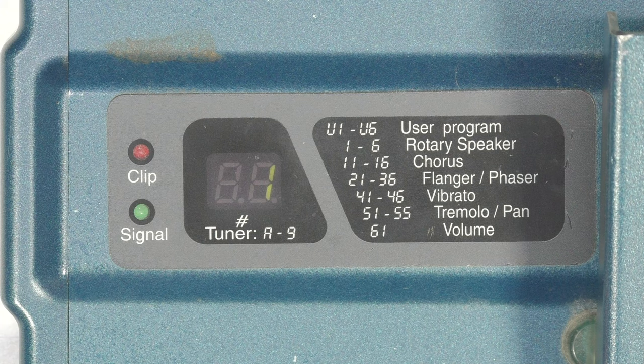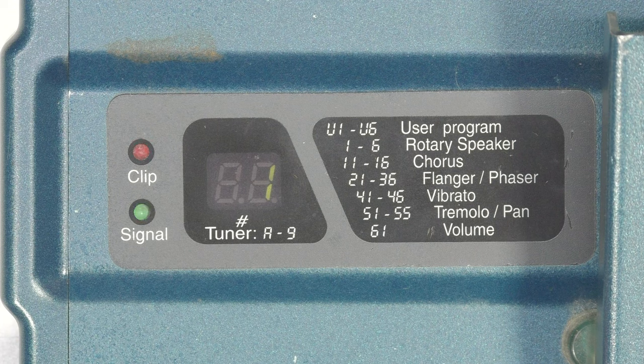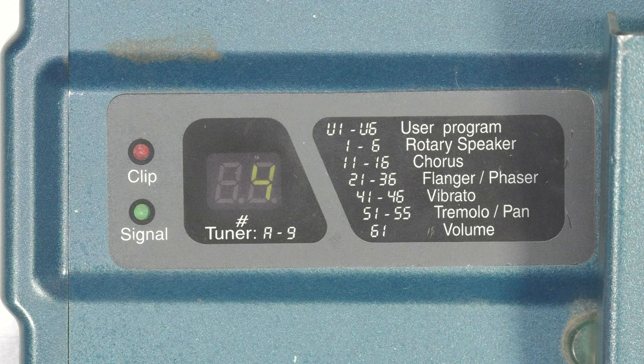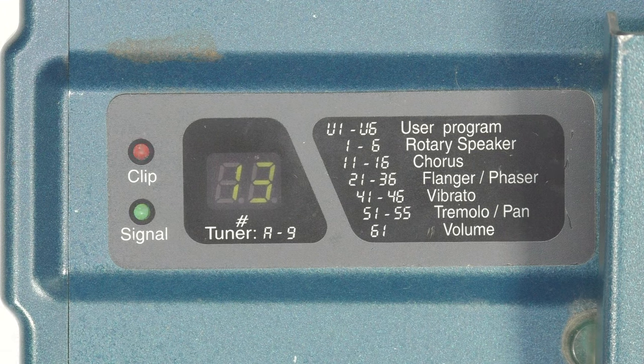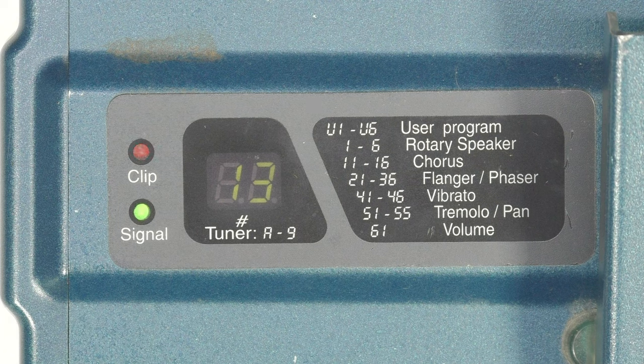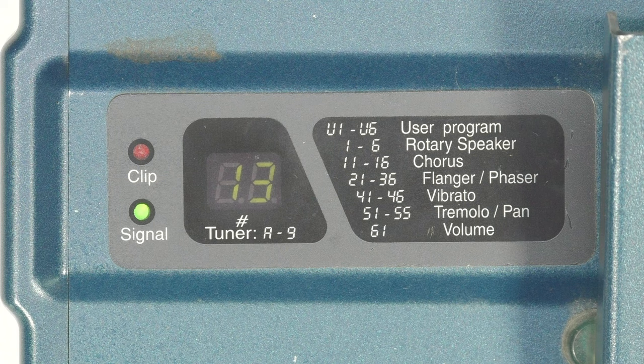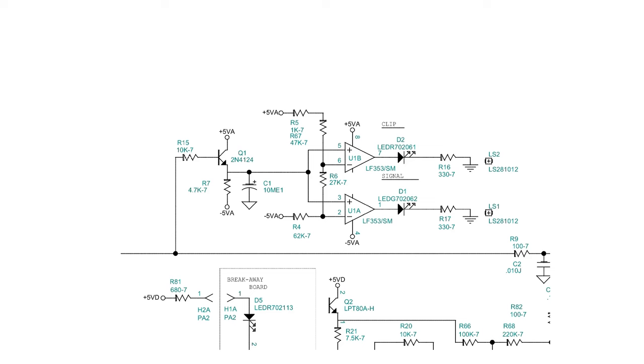Before we move on from the input section, there's something I skipped. The signal and clipping indicators. Audio equipment works best when fed a signal that's strong enough to overcome circuit noise while not being so strong that it overloads the circuits and causes undesired distortion. The pedal has a green signal LED and a red clip LED to help the user decide if their input signal needs to be turned up or down. To do this, the design takes the audio input signal after it's gone through the second amplifier, but before it goes into the ADC. A transistor rectifies the signal and shifts it in voltage, then capacitor C1 smooths it. This is a kind of peak detector.